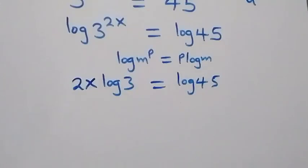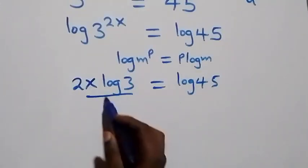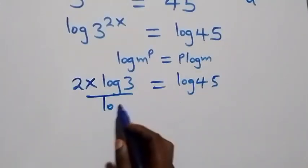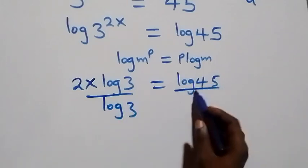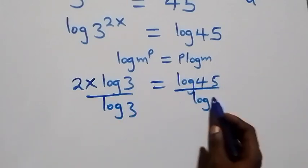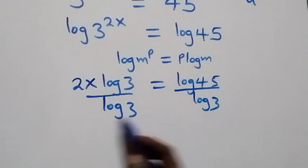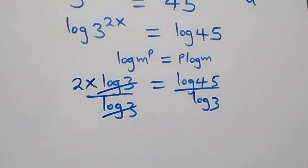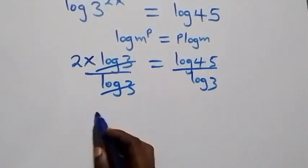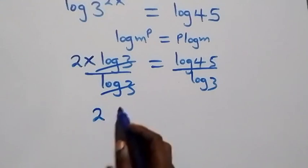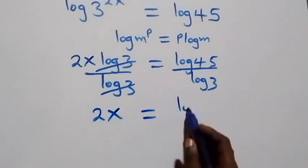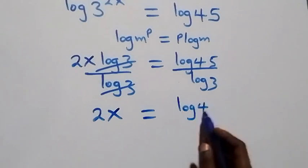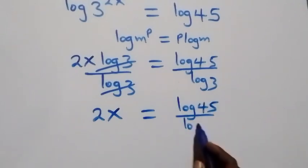And here we divide both sides by log three. As this log three cancels each other, we are left with two x, which equals to log forty-five over log three.